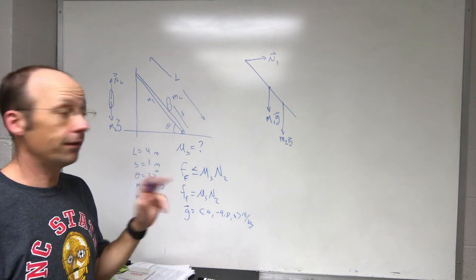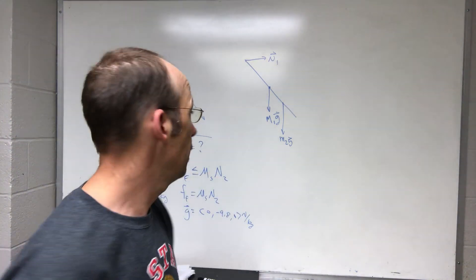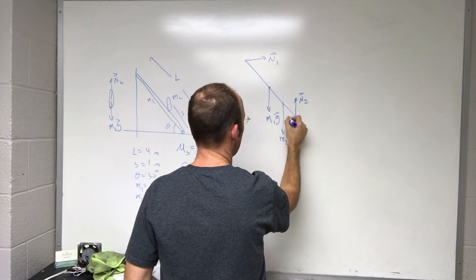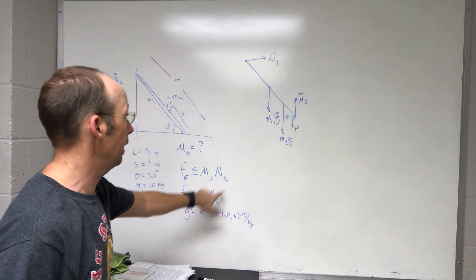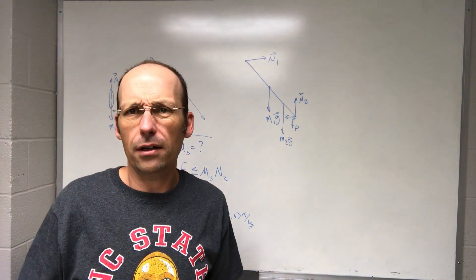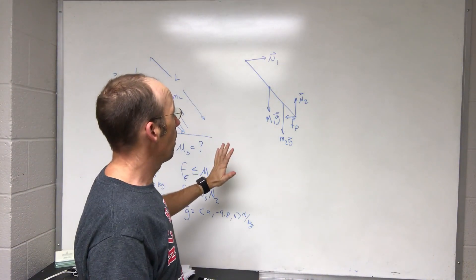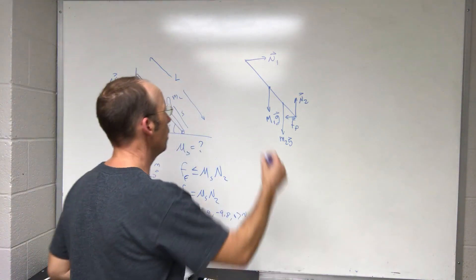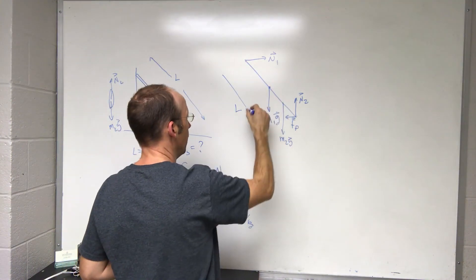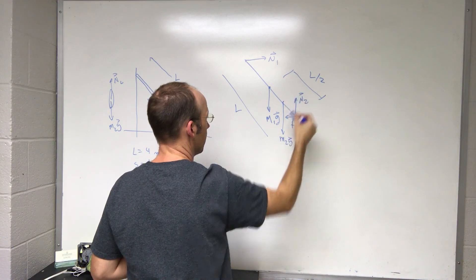At the bottom contact point, I draw two forces: a normal force N2 pushing up, and a friction force F_friction pushing horizontally. That's why I labeled it N2 earlier — there are two normal forces in this problem. I'll label the full ladder length as L, the midpoint is at L/2, and the person's distance along the ladder as S.